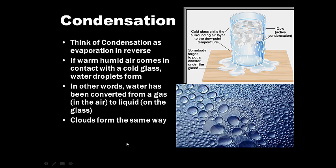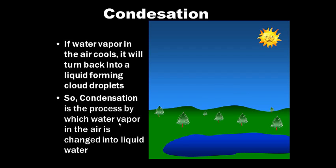Condensation. Think of condensation as evaporation in reverse. If we remove heat or energy, we go from gas back to a liquid. If warm, humid air comes in contact with a cold glass, water droplets will form. You're cooling the air around the outside of the glass, getting condensation. Water going from a gas in the air back to a liquid on the outside of a glass. Clouds form the same way. You're cooling the air essentially.